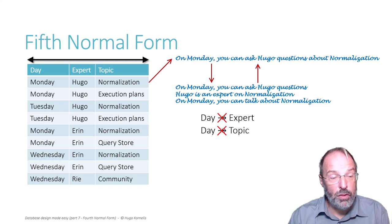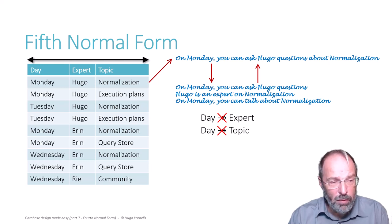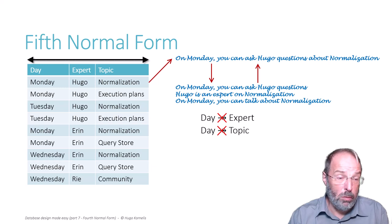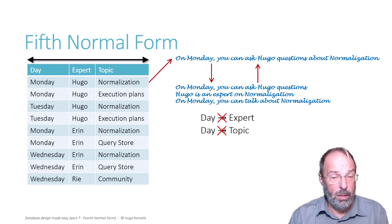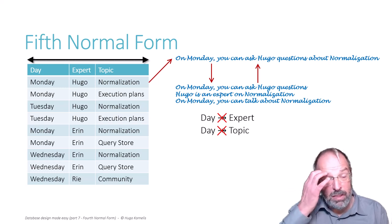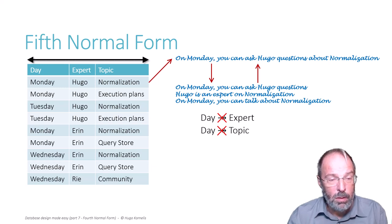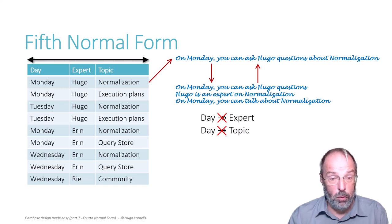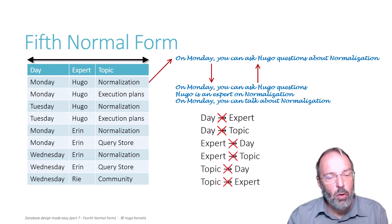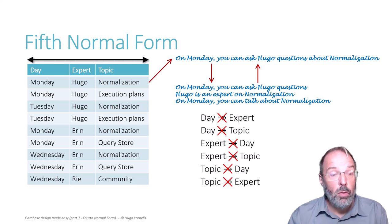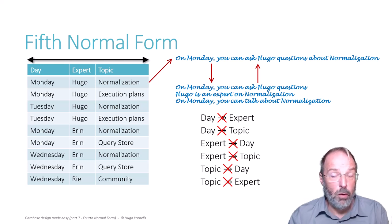Does day multi-determine the topic then? Let's look at Mondays. What topics can we talk about on Mondays? Normalization, execution plans, and query store. But what if Aaron decides that she doesn't want to be an expert on query store anymore? Then only normalization and execution plans remain. So the topics available on a given day depend on another attribute — the expert. Again, not a multivalued dependency. And you can check the other four possible multivalued dependencies the same way and you will see that none of them exist. There are no multivalued dependencies between subsets of a key in this example. Hence, 4th normal form is not violated.